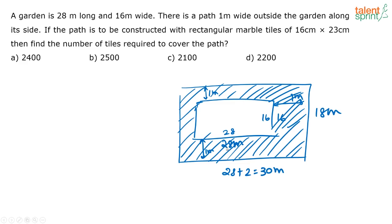Now what is the area of the shaded region? It is nothing but the area of the bigger rectangle minus the area of the smaller rectangle. So that is nothing but 30 into 18, that is the area of the bigger rectangle, minus the area of the smaller rectangle, that is 28 into 16. So this is 540 minus 448, which is equal to 92 meter squared.